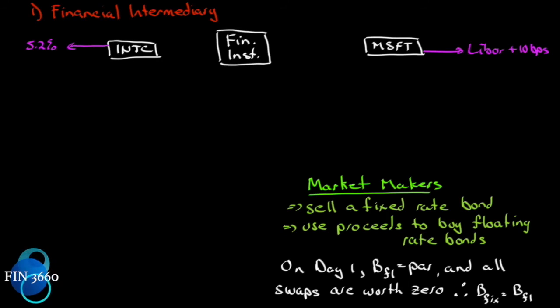Let's introduce the financial intermediary so we can see where some leakage in the system occurs. Microsoft has external debt that it pays at LIBOR plus 10 and would rather have a fixed rate. Intel has external debt at 5.2% but would rather pay LIBOR. Intel is going to enter into an agreement with the financial institution, Microsoft will do the same, so Microsoft and Intel may not even know that the other exists.